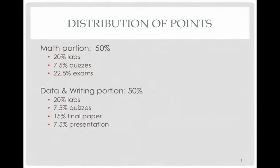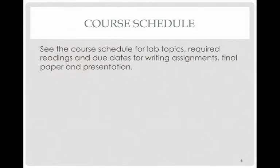You just finished the math portion of the class, which was worth half the points for your final grade. The data and writing portion will be worth the other half, set up in a very similar way: 20% lab, 7.5% quizzes, and the equivalent of exams for the data portion are your final paper, worth 15% of the grade, and 7.5% for the presentation. You should see the course schedule for lab topics, required readings, and due dates, which will show how the work is divided up for the rest of the semester.